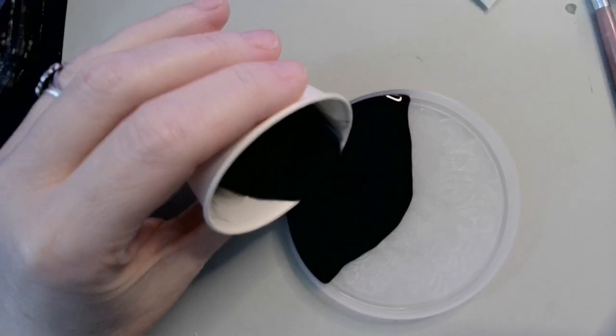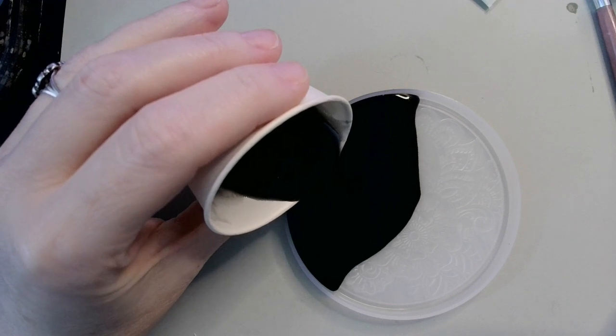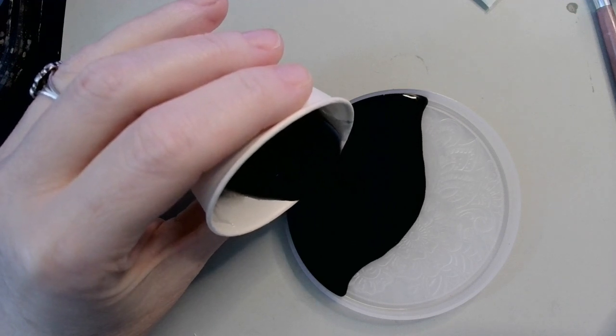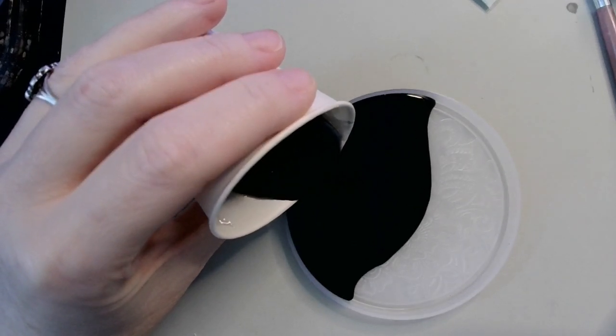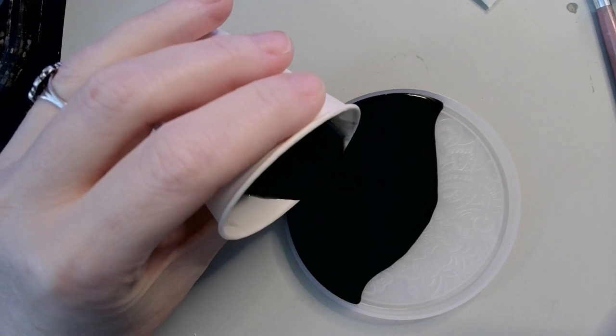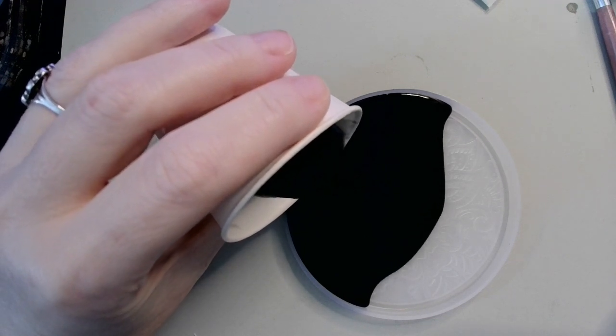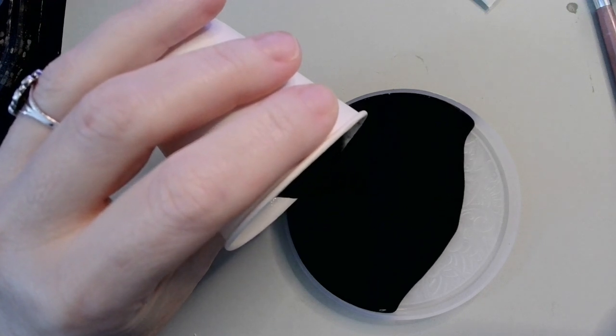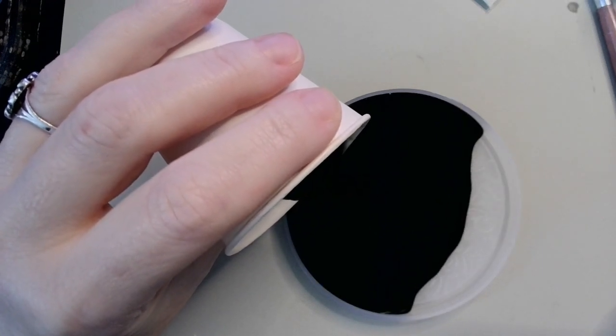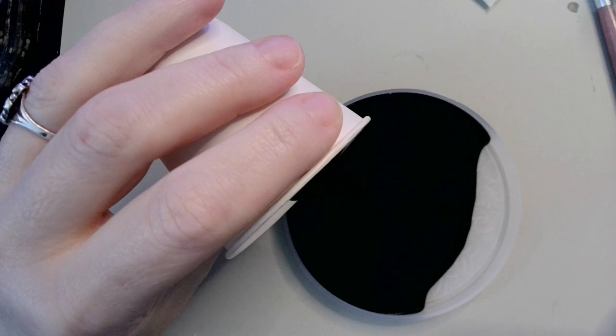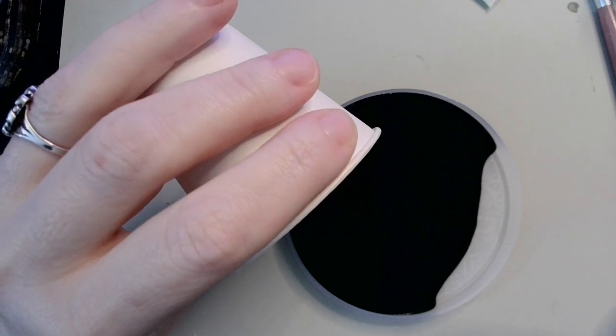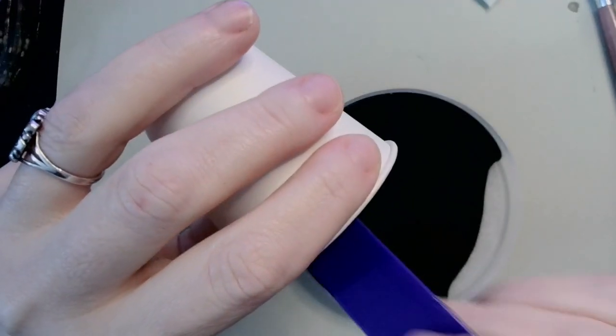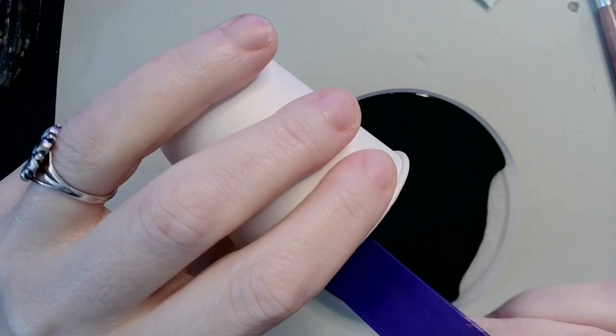Because with all of those little details in the pattern, I want to try to get as few bubbles as I can. So that's why I'm pouring kind of slow and letting the resin take over. I'm not going to be heavily poking it with a stick on the pattern because I don't want to disrupt the powder as much as possible.